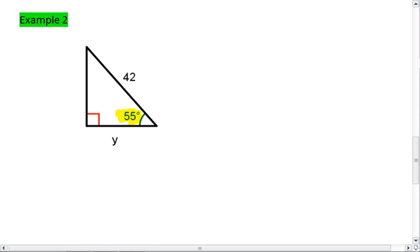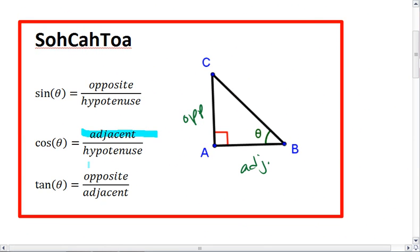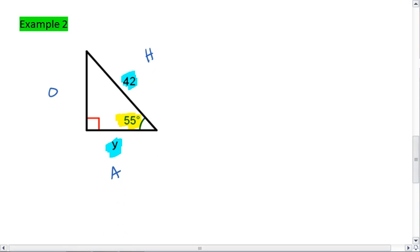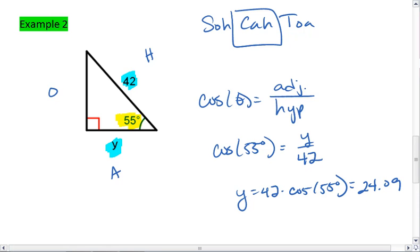We have our angle, which means we have opposite, adjacent, and hypotenuse. We're given the hypotenuse and the adjacent. Looking at our happy box, we're working with adjacent and the hypotenuse. We're working with cosine. We have the CAH part of SOHCAHTOA, where cosine theta equals adjacent over hypotenuse. That means cosine of 55 degrees equals Y over 42. Y equals 42 times cosine of 55 degrees. Cosine of 55 is 0.57. Multiply that by 42, and we get 24.09. So Y in this case is 24.09.